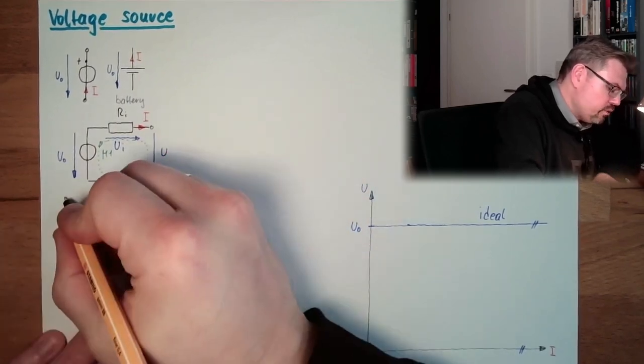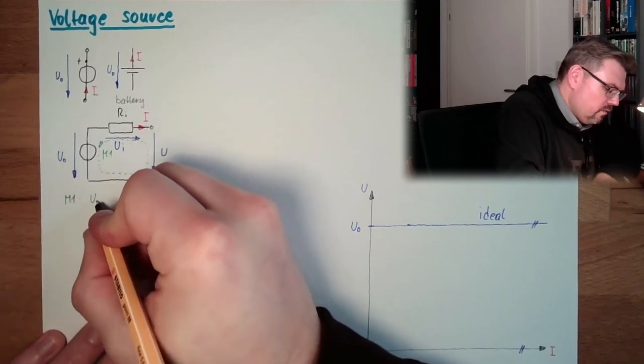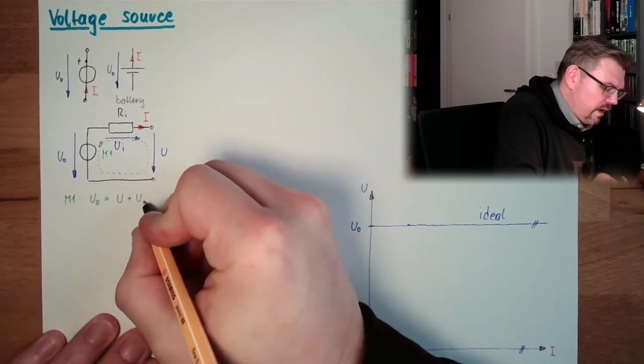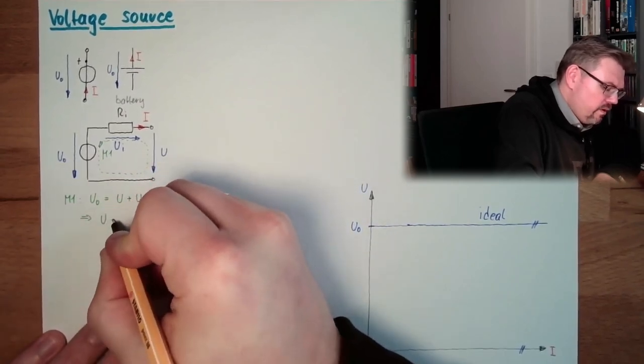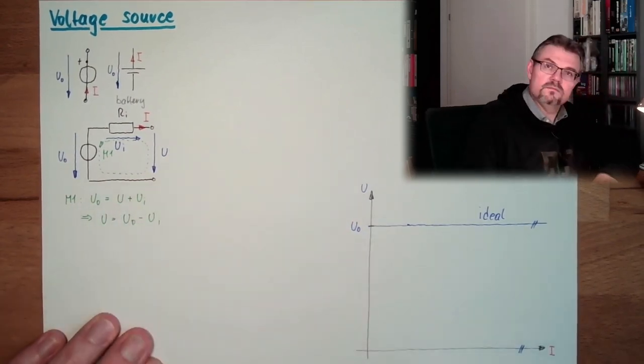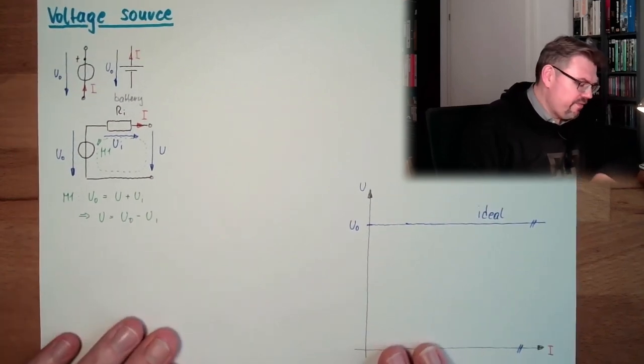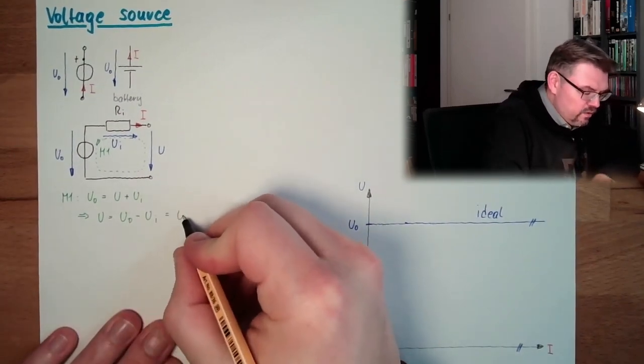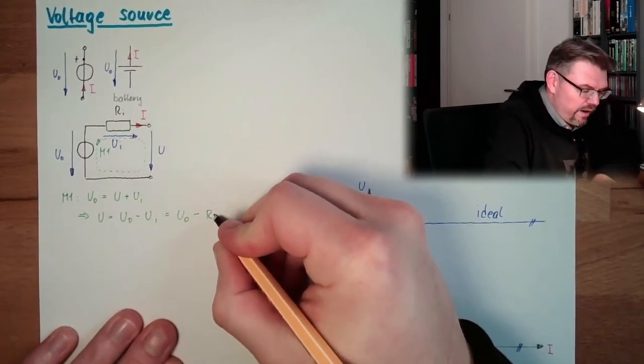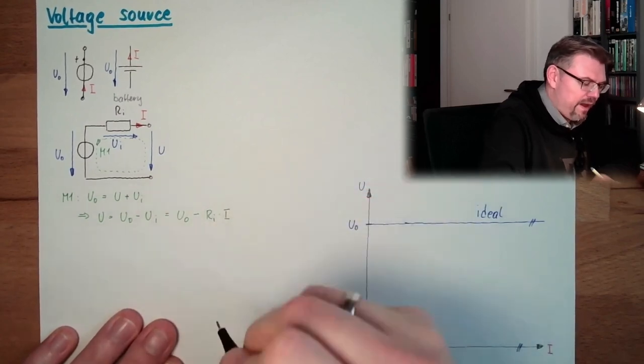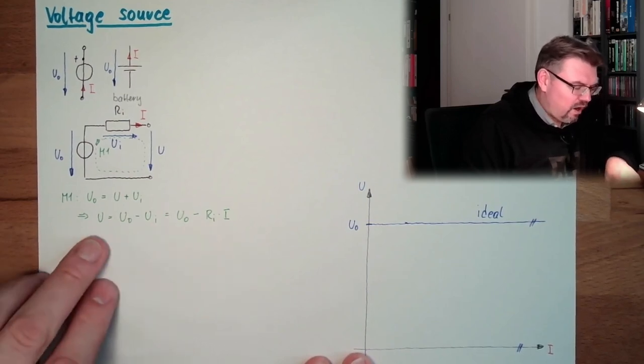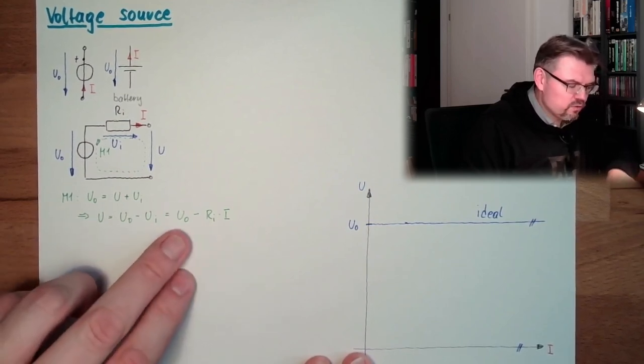Loop 1, Mesh 1. U0 equals U plus Ui. This means U is U0 minus Ui. All right? So, and this is U0 minus, and now Ohm's law, Ri multiplied by I. This is the relation between outer voltage and source voltage and current.